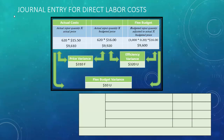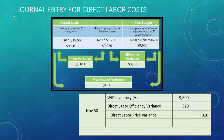Direct labor variances can be recorded in one entry. On November 30th, debit WIP inventory $9,600 — the flex budget amount. Unfavorable variances get debited: debit direct labor efficiency variance $320. Favorable variances get credited: credit direct labor price variance $310. Lastly, credit salary and wages payable for the actual amount owed to employees, $9,610.